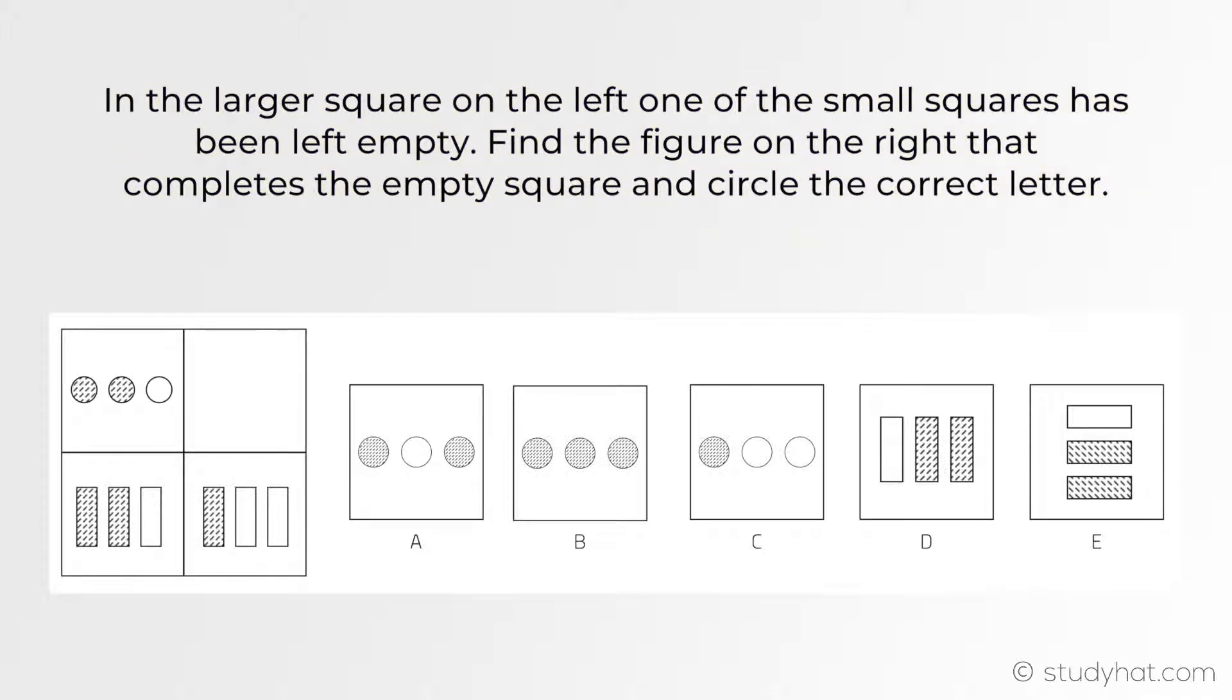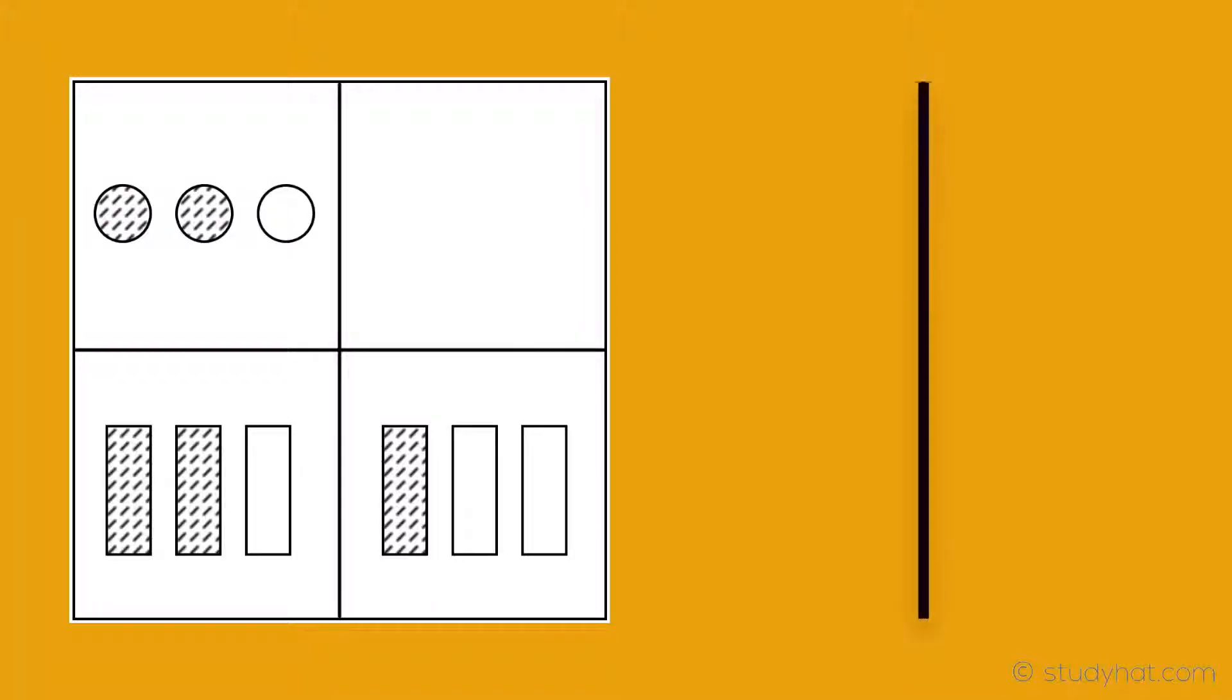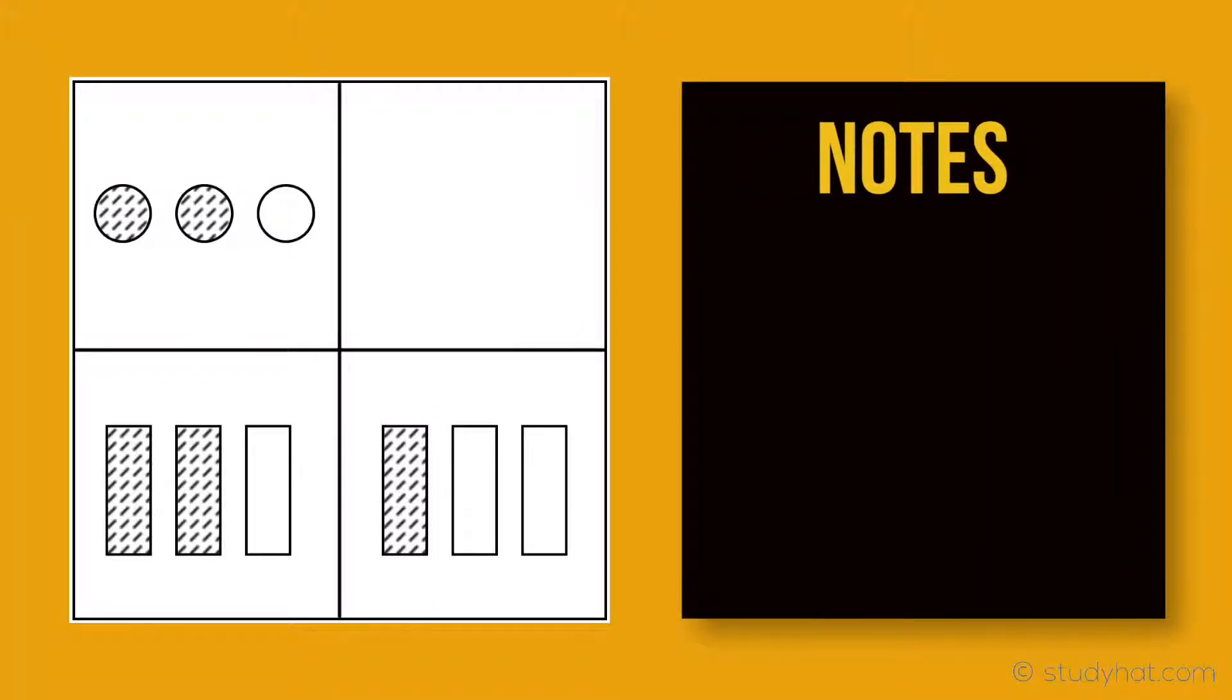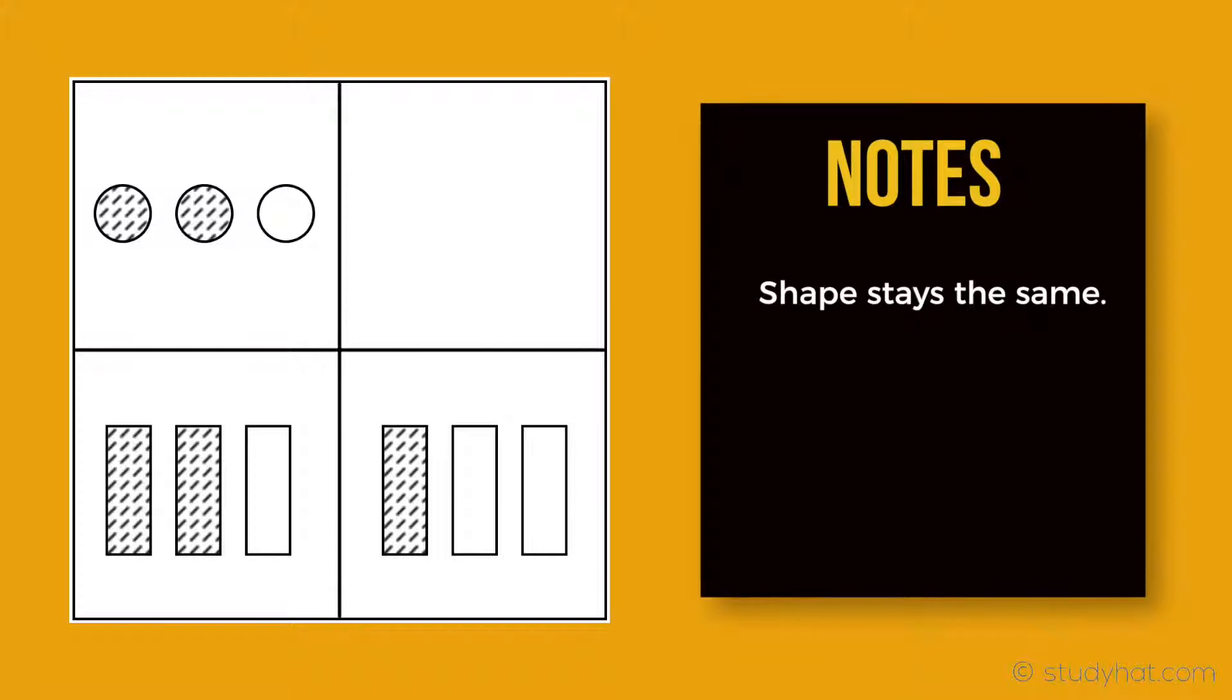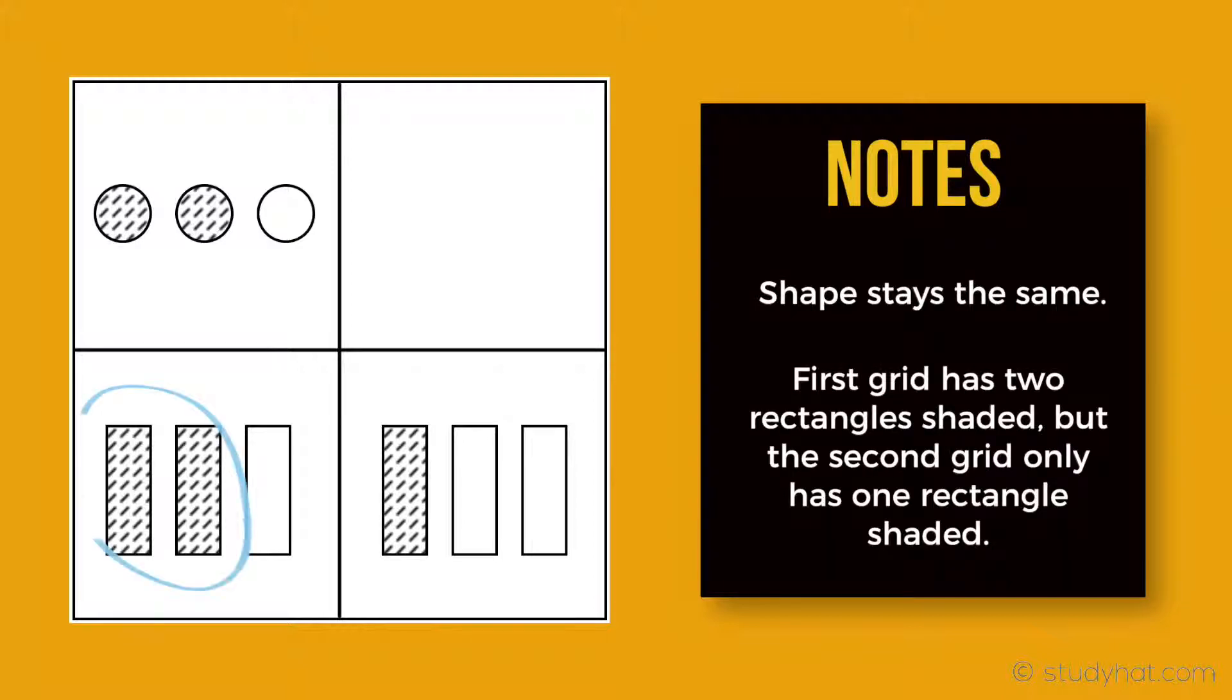Starting off, if we take a look at the bottom left and right grids, let's note down what we can see. Looking at it, I can note that the shape stays the same. The reason being is because there's three rectangles in both grids and nothing changes when you look at the actual shape. But by taking the shading part from SPANS, we can see that the first grid has two rectangles shaded, whereas the next grid only has one rectangle shaded. That is now the pattern that we have identified.